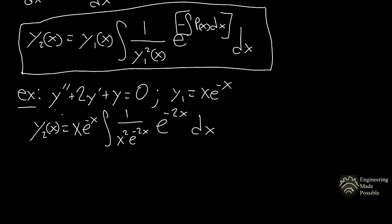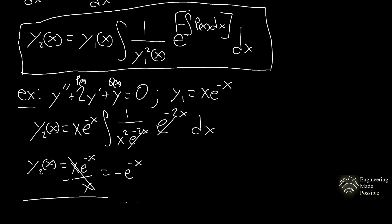For this second-order differential equation in standard form, p(x) equals 2 and q(x) is identified accordingly. After cancellations and simplifications, we find our second solution: y₂ equals negative e^(−x). It's much faster using the formula. Since y₁ and y₂ are linearly independent, the general solution is a summation of these two functions with arbitrary constants.